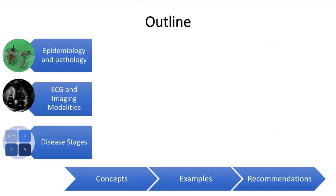The outline for the next 35 to 40 minutes covers: the epidemiology of the disease and physiopathology as it relates to imaging; features for electrocardiogram and imaging examination modalities; and the different stages of the disease. Within each of these three bigger topics, we will go through some basic concepts, some examples, and what we as a group have recommended in our document.